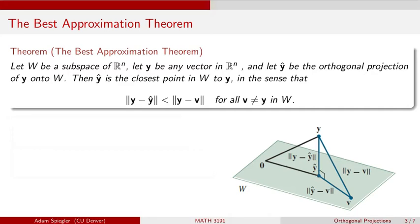We can state this using length notation by saying that the distance of y minus y-hat is going to be less than the distance of y minus any other vector v which sits in this plane. If there is some other vector v claimed to be an even better approximation, the distance from y to that point is the hypotenuse of some triangle. This results from the fact that the length of a non-hypotenuse side of a right triangle must be less than the hypotenuse. This is true for any vector v, so y-hat gives us our shortest distance to the subspace.